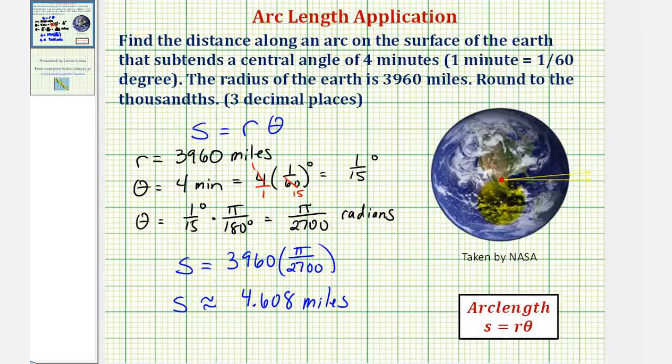So looking at this picture of the earth here on the right, if the central angle was one-fifteenth of a degree, then the arc length on the surface of the earth, this length here, would be approximately four point six zero eight miles. Of course one-fifteenth of a degree is a very small angle. It would be much smaller than this angle pictured here.